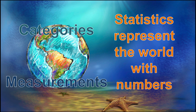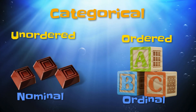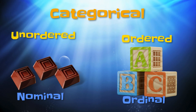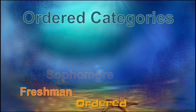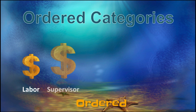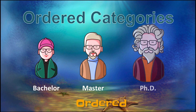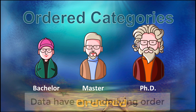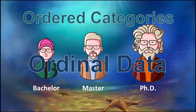Categorical variables come in two varieties: ordered categories or unordered categories. Your variable may be an ordered category, such as class standing — freshman, sophomore, junior, senior — or income status, as labor, supervisor, management, executive, or level of education: bachelor, master, doctorate. Because of the underlying hierarchy, category, or order in the data, these are ordinal data.